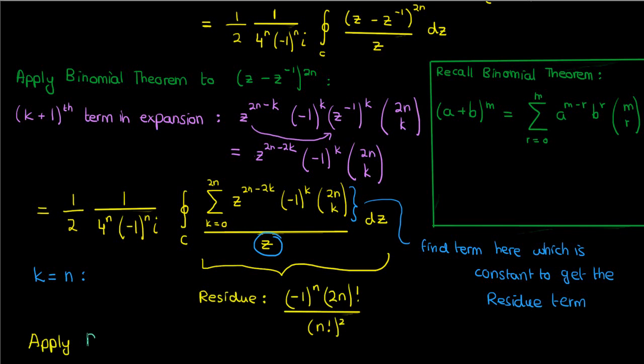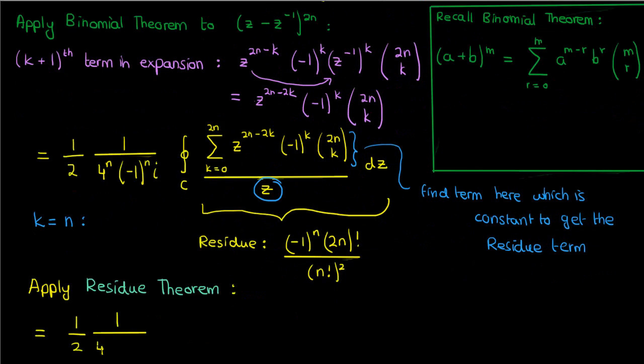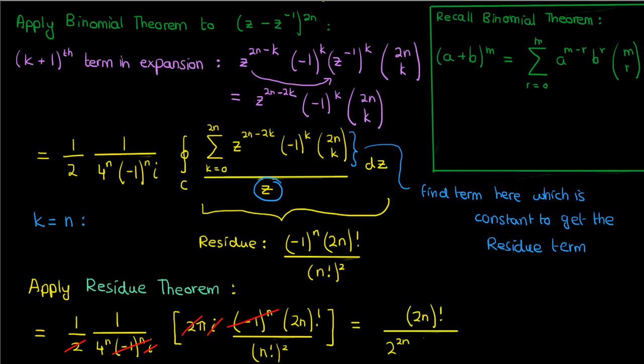So now if we apply the residue theorem to compute this whole integral, this is what we'll get. And if we simplify this expression, we'll finally end up with 2n factorial over 2 to the power 2n times n factorial squared times π. So we found the integral of sine of theta to the power 2n using the residue theorem.